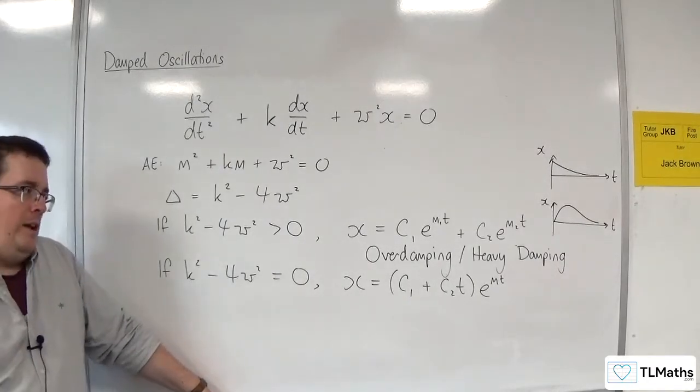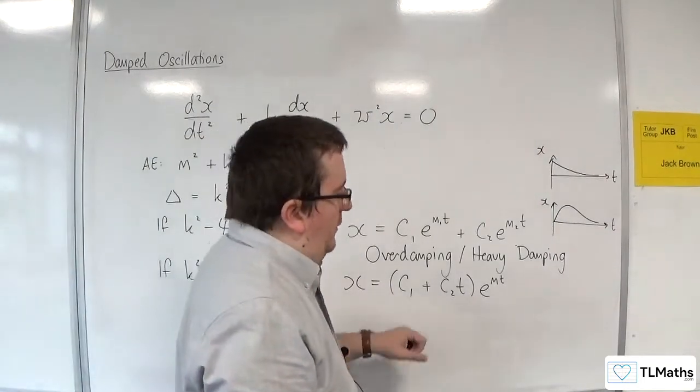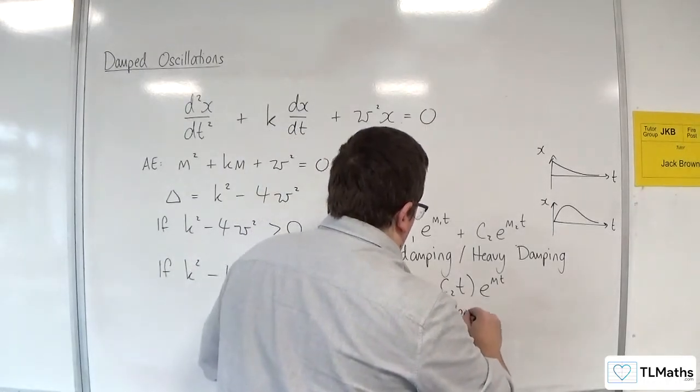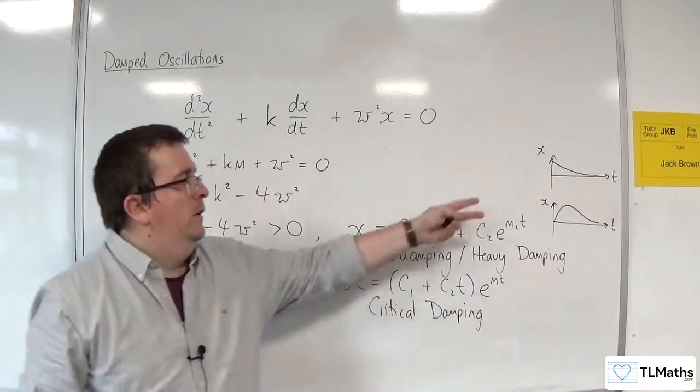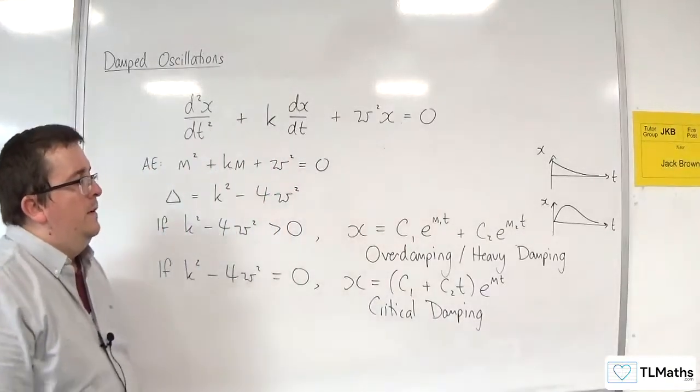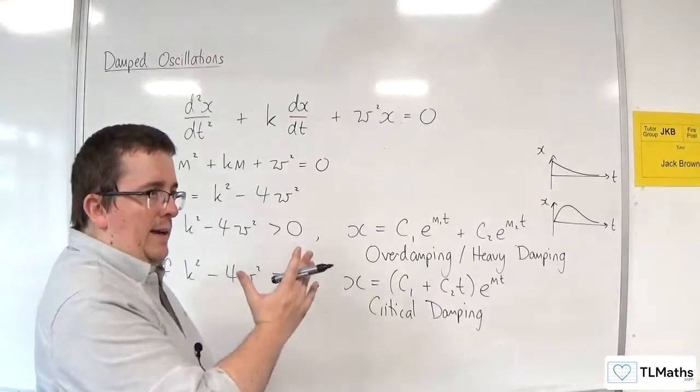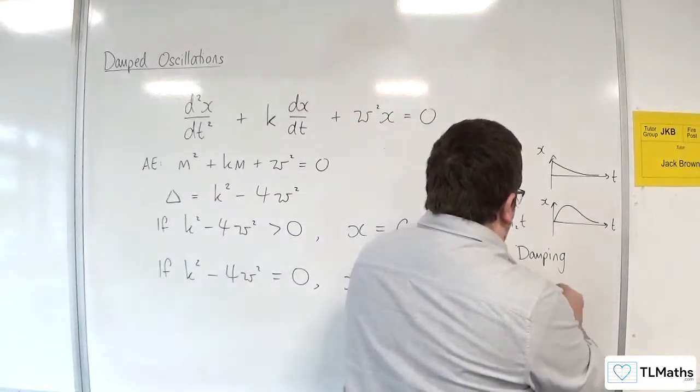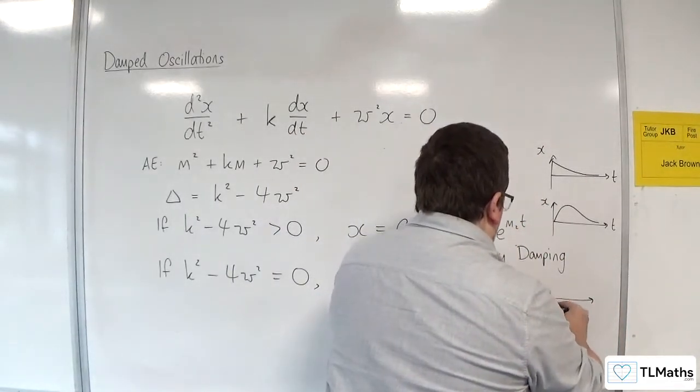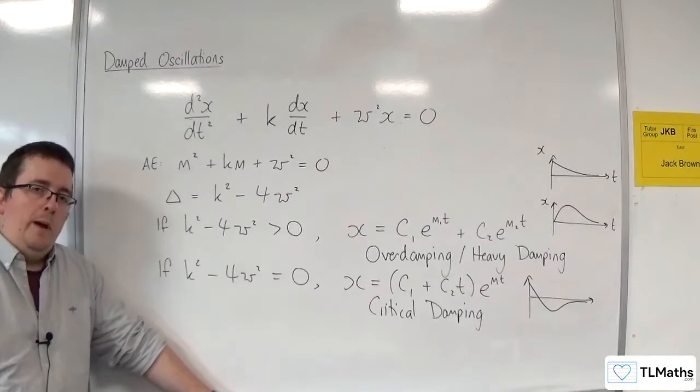Now, when you've got that situation, your critical damping, as it's referred to, can look very similar to these situations here. You could have that it does one swing back and then comes to a stop. So it could look like this, for example. You could do something like that, depending on the curve that you have, of course.